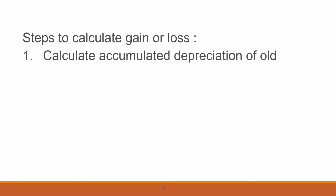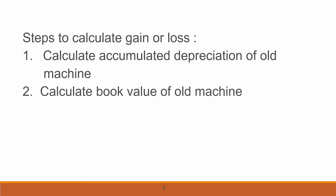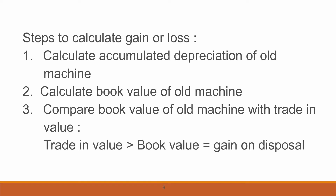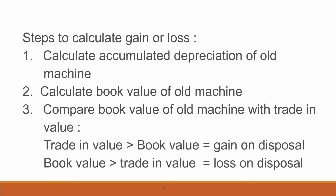We can calculate gain or loss using a calculation or journal entry approach. Step one: calculate accumulated depreciation of the old machine. Step two: calculate the book value of the old machine. Step three: compare the book value of the old machine with the trade-in value. If the trade-in value is bigger than the book value, we get a gain on disposal. If the book value is bigger than the trade-in value, we get a loss on disposal.